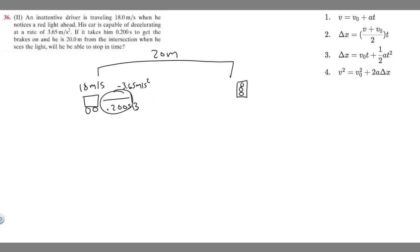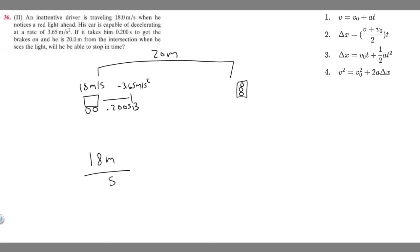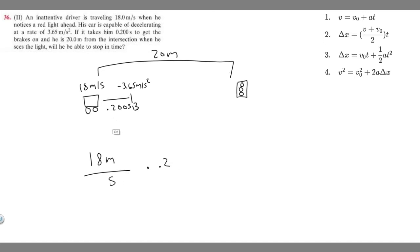To find how far he travels during the reaction phase, he's going 18 meters per second for 0.2 seconds. We can write this as 18 m/s × 0.2 s — the seconds cancel, leaving meters. So 18 times 0.2 equals 3.6 meters. Before he presses the brakes, he travels 3.6 meters.